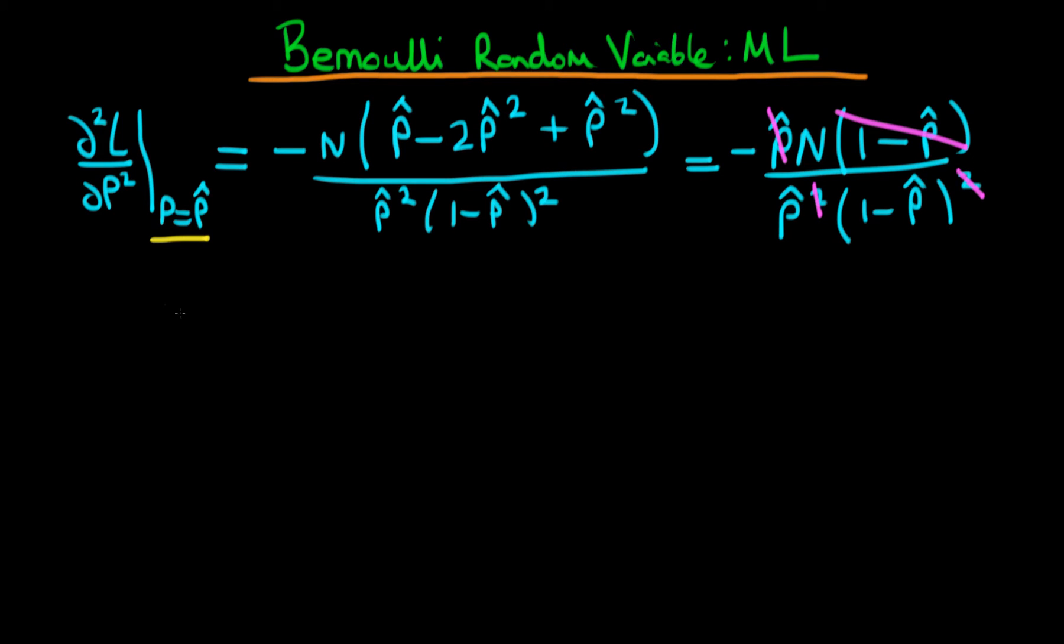So writing it like this, we then have that the second derivative of the log-likelihood with respect to the parameter P evaluated at P equals P-hat is given by minus N over P-hat times 1 minus P-hat.